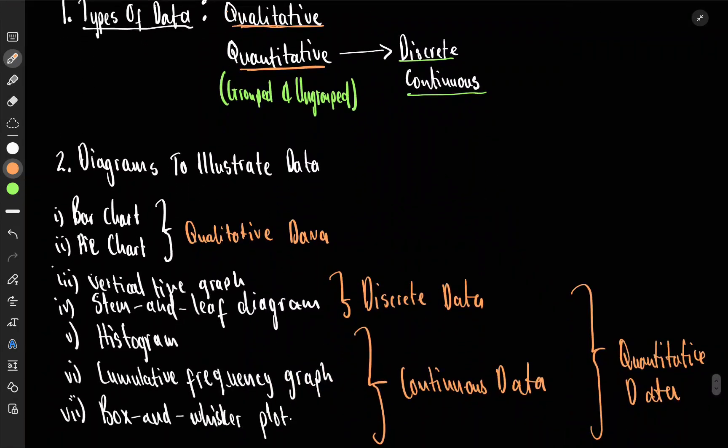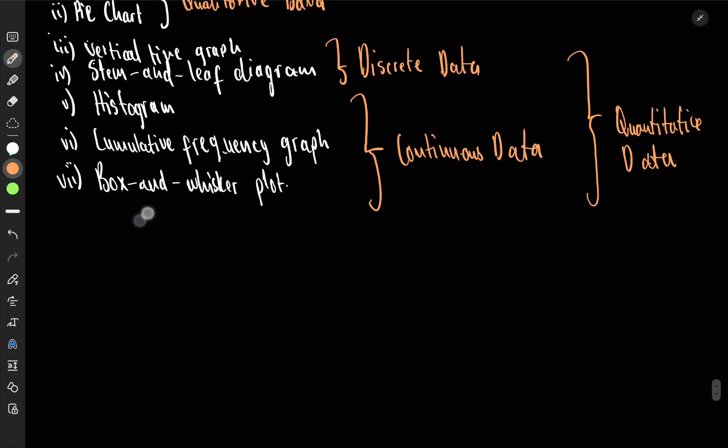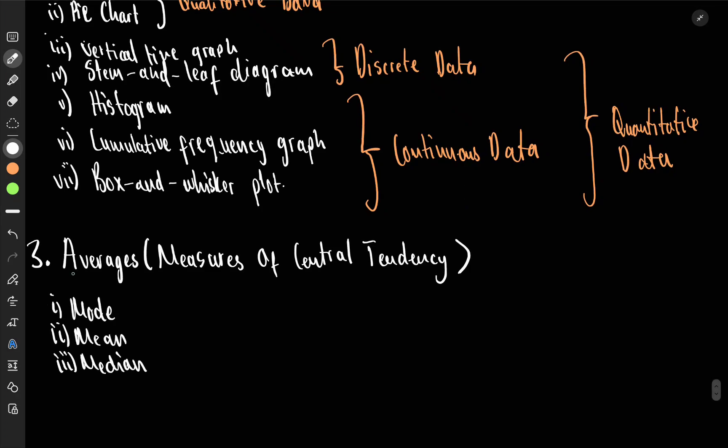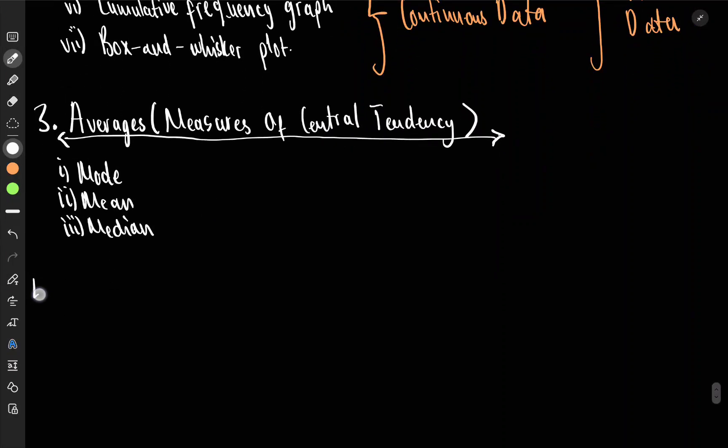Now, what about thing number three? The third important thing is we have to know, I can call them averages, but they are also called the measures of central tendency. We'll talk more about them when we are doing them. So I don't want to talk too much about it to waste time. This is just an intro. And in here, we have three. One is mode, the other one is the mean, and the other one is the median. So these three guys tell you the middle value in different ways. But all they want to do is to have a value represent your data. So we want to pick an average of our data. And these are the three.